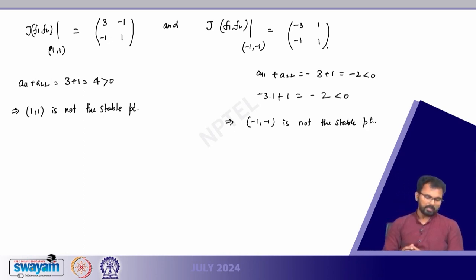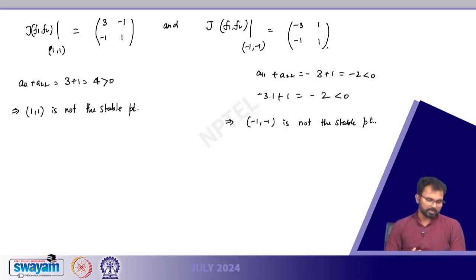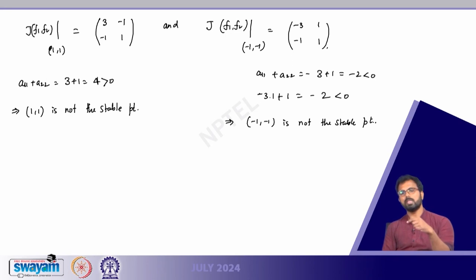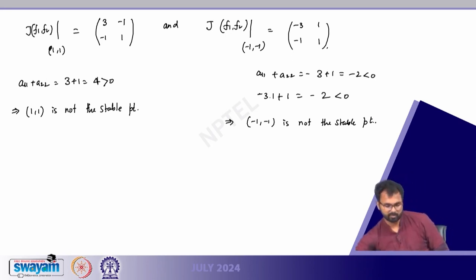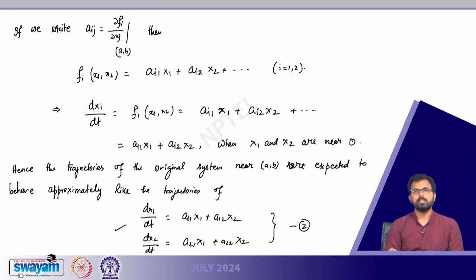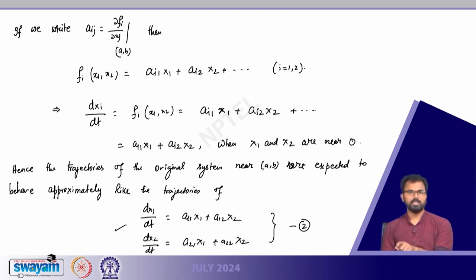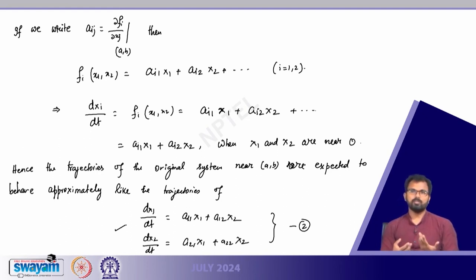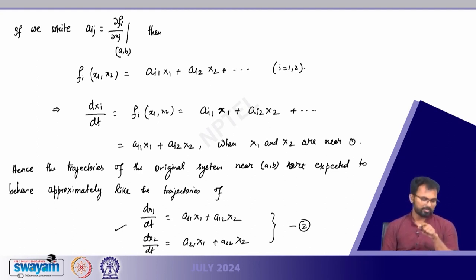So both equilibrium points lead to unstable solutions, and we are not getting any stable equilibrium in this case. Alternatively, we can follow the matrix route: after the Taylor series expansion we get a linear equation. Taking the Jacobian at (1,1) as our matrix A, we find eigenvalues by solving det(A − λI) = 0.